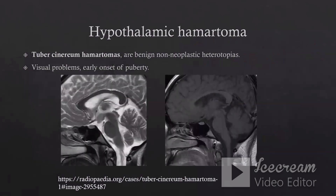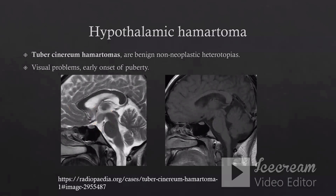One of the most important causes for epilepsy is hypothalamic hamartoma. This is considered as a benign, non-neoplastic heterotopia involving the tuber cinereum, which is a part of the hypothalamus. Most commonly, the patient with hypothalamic hamartoma is complaining of epileptic fits, sometimes associated with visual problems and early onset of puberty. As you see here, we have a well-defined mass involving the tuber cinereum of the hypothalamus. This mass has signal intensity very similar to gray matter — isointense signal in T2, also isointense signal in T1, with no contrast enhancement. It is one of the most important causes for epileptic fits, so we should concentrate on the hypothalamic region as well.